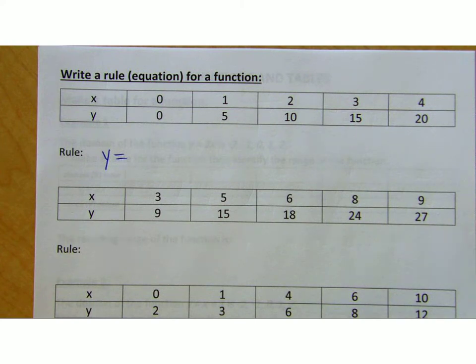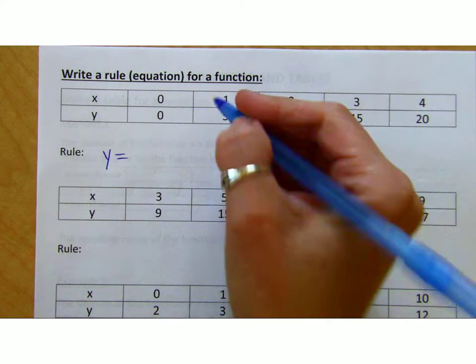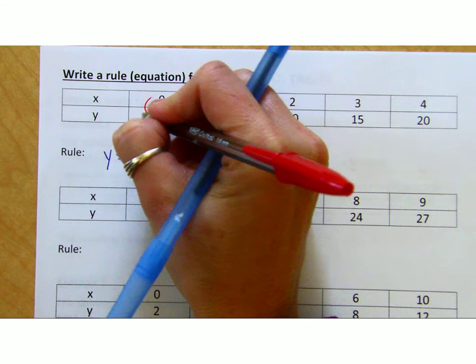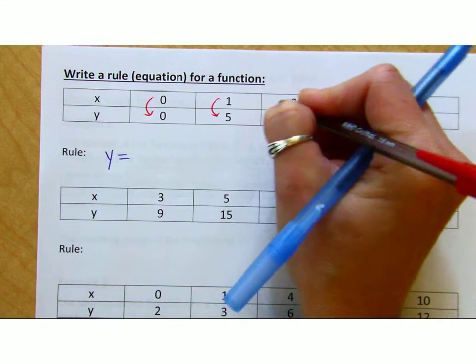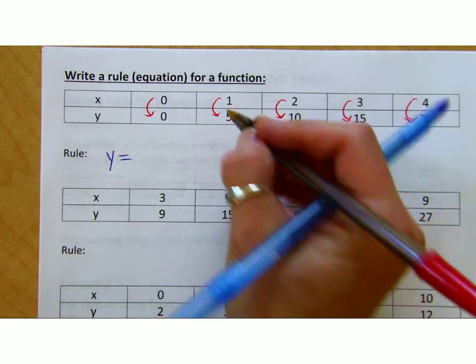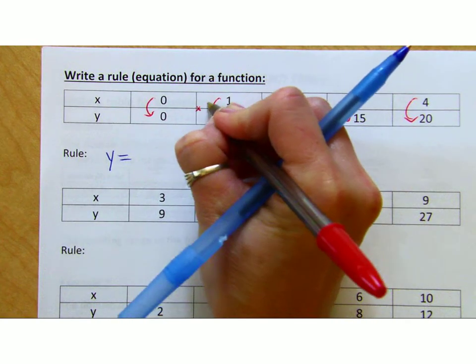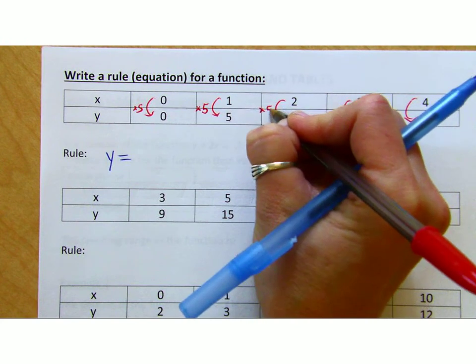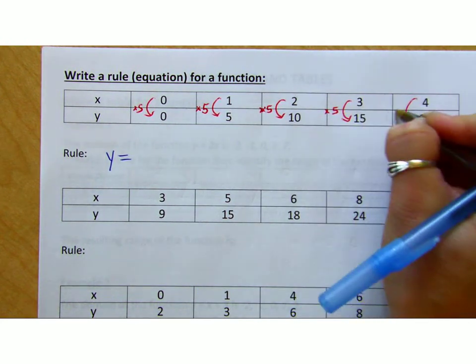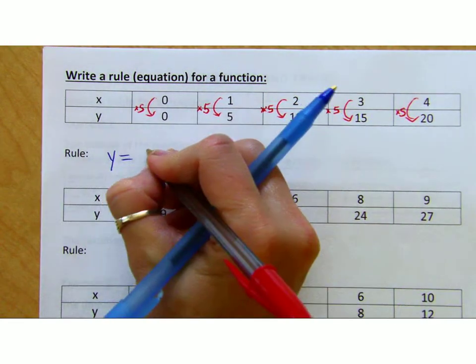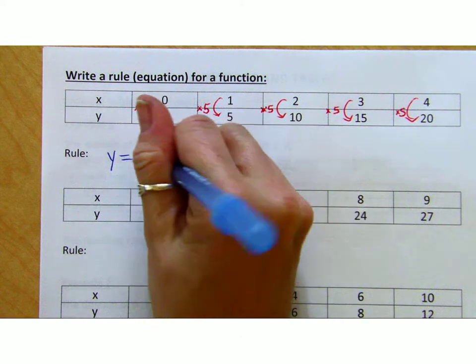I would look to see from the x to the y if the same thing happens to all of them. And in this case, it does. So you know right away that this is a times 5. 0 times 5 is 0, 1 times 5, 2 times 5 is 10, 3 times 5 is 15, and so on, right? So doesn't that mean that all the y values are equal to 5 times the x values?